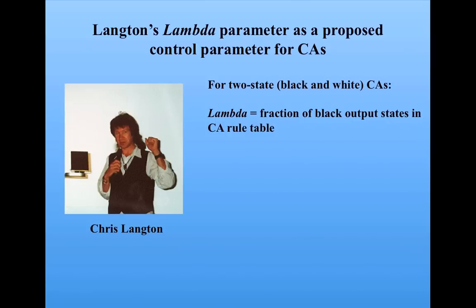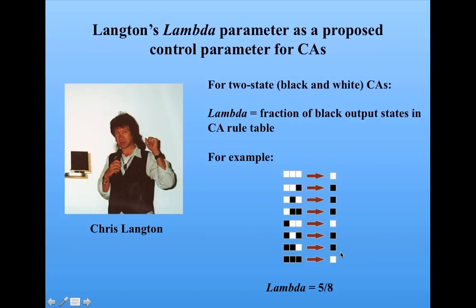For two-state cellular automata of the kind we've been looking at, that is, each cell is either black or white, lambda is very simply defined as the fraction of the black output states in a rule table. For example, given this rule table, we would count up in this column of output states, we have 1, 2, 3, 4, 5 over 8 total. So lambda here is 5 eighths. That's a really simple definition.